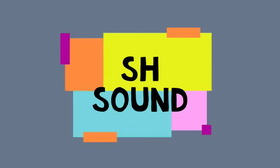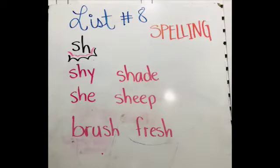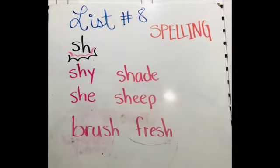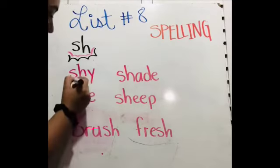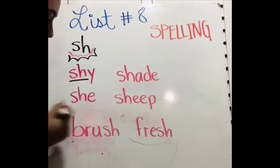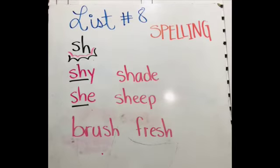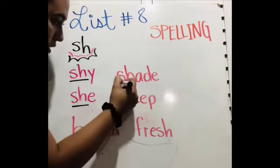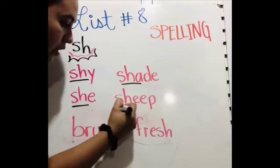That way, we're going to start seeing the list. We're going to start with the first group of words that have the SH sound. For example: shy, she, shade, ship.